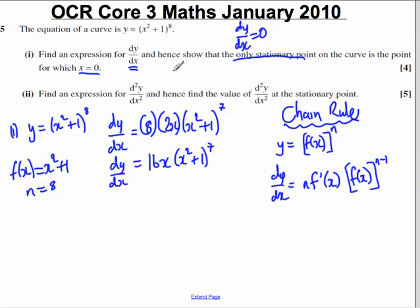Now, it says hence show that the only stationary point of the curve is where x is 0. For a stationary point, for stationary points, dy by dx is always equal to 0.